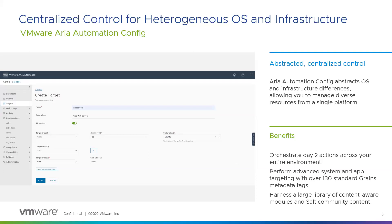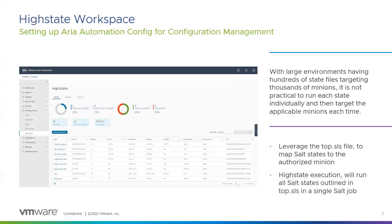Organizations must adopt a centralized automated approach to configuration management. In this example, we're creating a target group for minions with the Ubuntu operating system that contains the name 'web'. We could also focus our grains on many other grain keys — there are over 130 predefined keys and you can define additional keys as well. Any machine running an Ubuntu-based OS with the keyphrase 'web' in their name would be targeted.